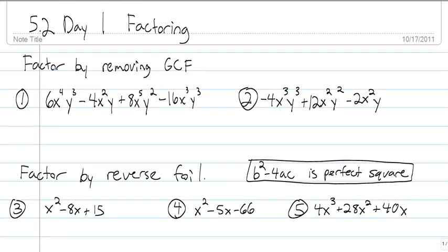Now remember, factoring is when we're trying to simplify things. The first thing you should always do when you're factoring — the first step — is to look for your GCF. This is the first step that you need to find. What that means is this is something we can divide out of each term, or pull out of each term.